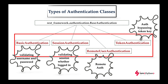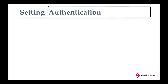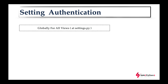RemoteUserAuthentication validates external user authentication from different systems, useful for larger projects. Overall, these four authentication classes determine whether a user is valid or not. There are three ways to implement authentication in Django REST Framework: at the global level via settings.py, at the class-based view level, and at the function-based view level using decorators.